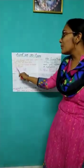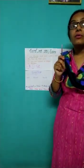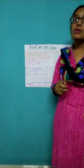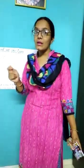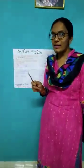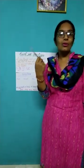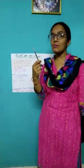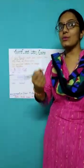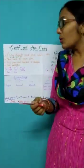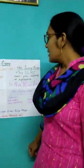Living things reproduce — they reproduce to produce more of their own kind. But can a pen multiply itself? No, it cannot multiply itself. It cannot reproduce. So it is a non-living thing.